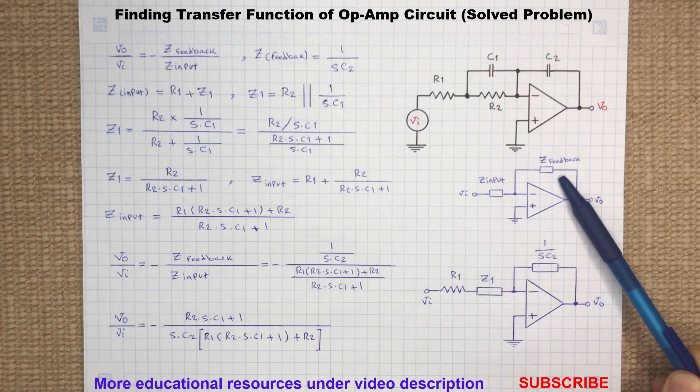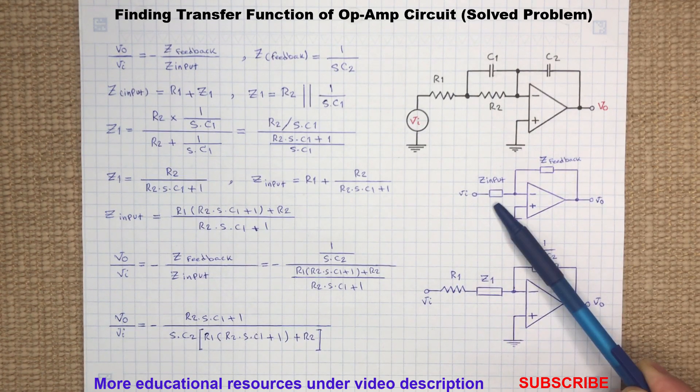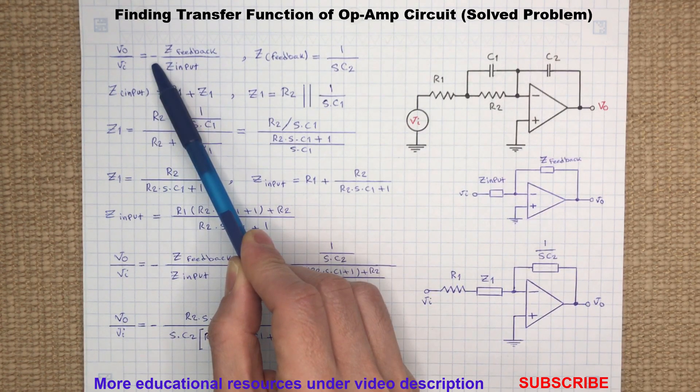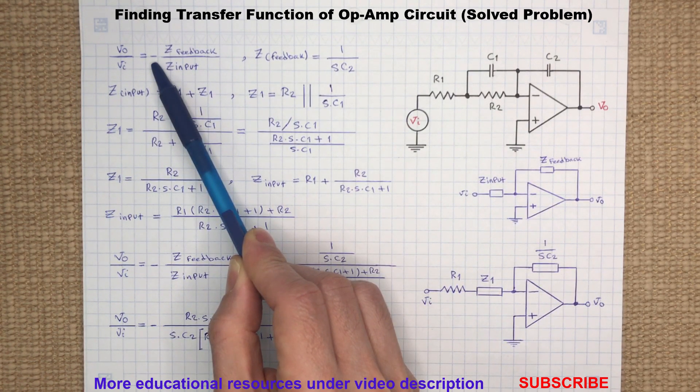Here the Z feedback is the impedance of the feedback circuit and Z input is the impedance of the input circuit. The negative sign here is the 180 degree phase shift between the input and output.